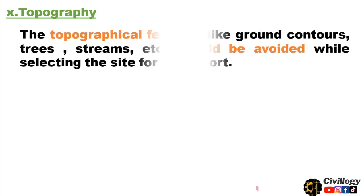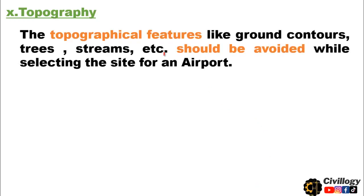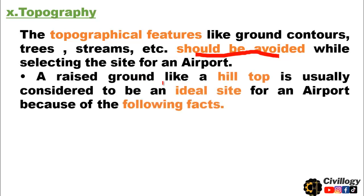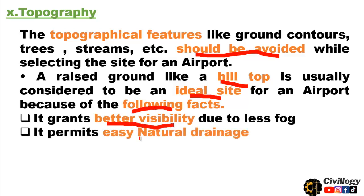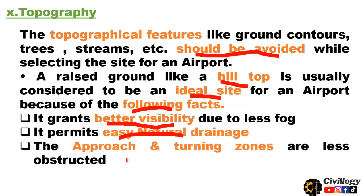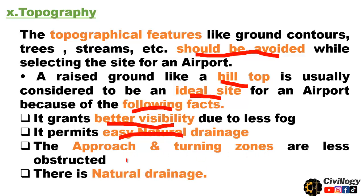The tenth point, which is very important for the site selection of an airport, is topography. Topographical features like ground contours, trees, and streams should be avoided while selecting the site for an airport. A raised ground like a hilltop is usually considered to be an ideal site for an airport because it grants better visibility due to less fog, it permits easy natural drainage, and the approach and turning zones are less obstructed.